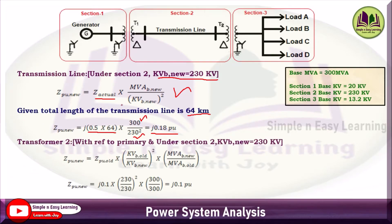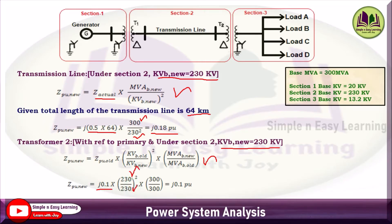For Transformer 2, consider with reference to the primary (HT side in Section 2, base kV = 230 kV). The impedance is given in per unit, so use the formula: Z_pu_new = Z_pu_old × (kVB_old/kVB_new)² × (MVA_B_new/MVA_B_old). Substituting j0.1 × (230/230)² × (300/300) = j0.1 pu.